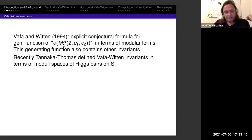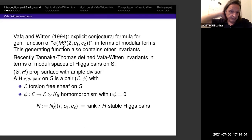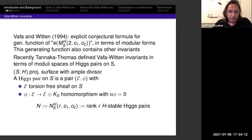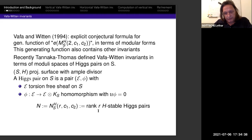These invariants have recently been given a mathematical definition by Tanaka and Thomas in terms of moduli spaces of Higgs pairs. I think Richard hasn't yet talked about it, but he may tomorrow. Let me briefly recall what these are. Let S, H be a projective surface with an ample divisor. A Higgs pair on S is a pair of a torsion-free sheaf E on S, and a homomorphism from E to E tensor K_S which is trace-free, together with a stability condition.